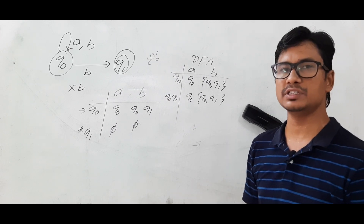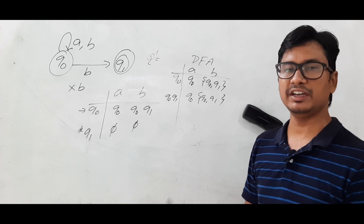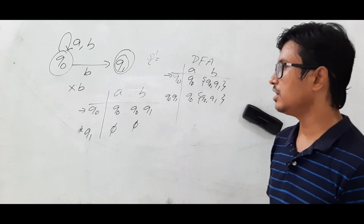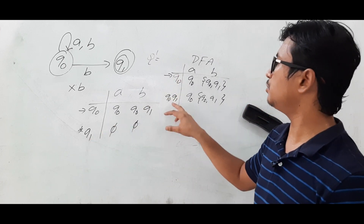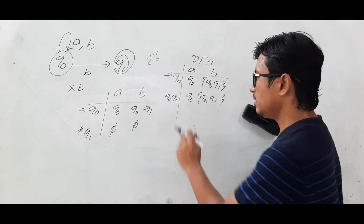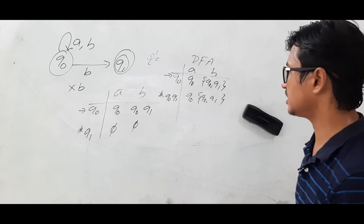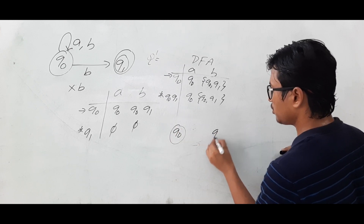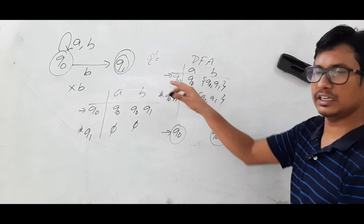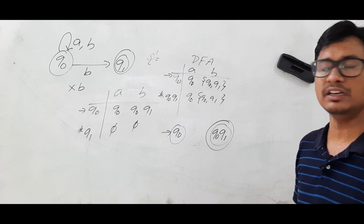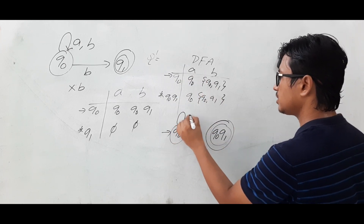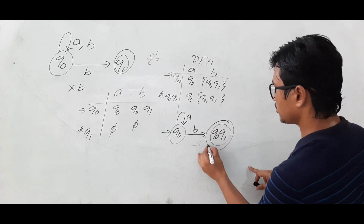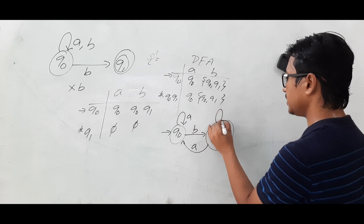Step 4: identify the final states in the DFA. Q0 acts as the initial state. Since Q1 is the final state in the NFA, any DFA state containing Q1 becomes a final state. So {Q0,Q1} acts as the final state. The DFA has states Q0 and {Q0,Q1}: Q0 on A → Q0, Q0 on B → {Q0,Q1}, {Q0,Q1} on A → Q0, {Q0,Q1} on B → {Q0,Q1}.